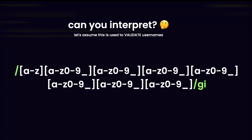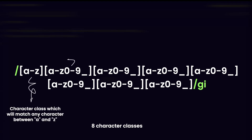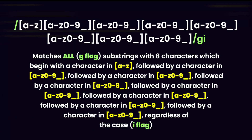For the second assignment, take a look at this regular expression. Earlier in this course I mentioned that regular expressions can be used for finding substrings and also for validating strings. Let's say we want to validate a username. Can you interpret how this regular expression defines the criteria? Pause and try before I share the answer. So this is a regex for validating usernames. We have eight character classes: the first is A to Z, and the remaining seven are each A to Z, 0 to 9, underscore.